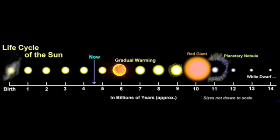The Sun will be fairly stable over the next 5 billion years, at which time it will enter its red giant phase.